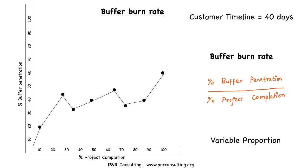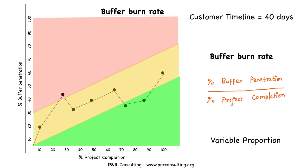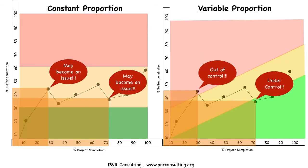That is where we use the variable proportion model. Here you can notice a much better buffer zoning idea, wherein the acceptable penetrations are at variable proportion. As the project moves towards completion, we allow the project to consume more buffer, indicated by a bigger green zone and a smaller red zone — this is more logical. Comparing the constant proportion and variable proportion graphs, we can understand that the variable proportion buffer graph shows a more realistic situation, helping us monitor the buffer in a foolproof manner. However, there is a catch: most status reports are human-prepared, and unless they are transparent enough, even with this monitoring the project will be doomed to failure. This happens because of fear of punishment, which is due to wrong metrics — bringing us back to the need for metrics designed to ensure proper behavior from a team.